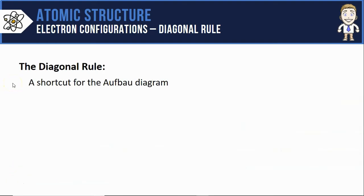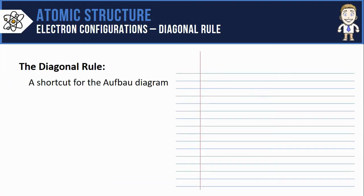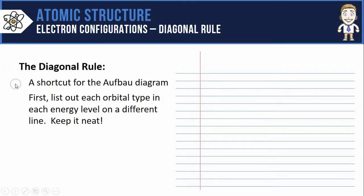So without an Aufbau diagram to follow, my favorite way to do this is with something called the diagonal rule. It's easy to write, and all you need is a piece of lined paper and a pen or pencil.